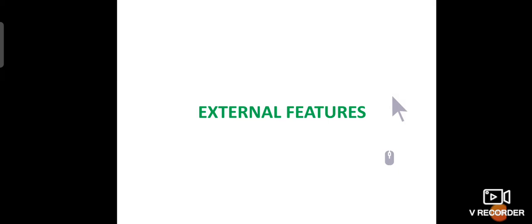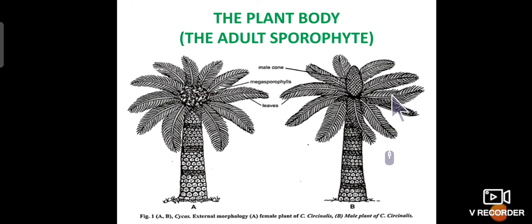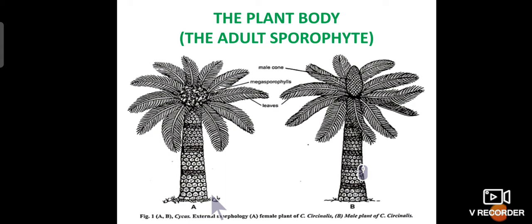In this video we are going to talk about the external features of the adult sporophyte, or the plant body, of Cycas. The Cycas plants are evergreen and slow-growing small trees. These plants usually resemble the angiosperms palm trees in external appearance, and they are differentiated into roots, stem, and leaves.